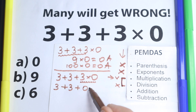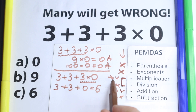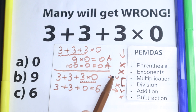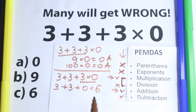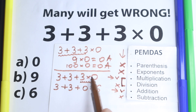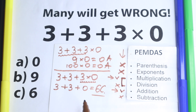So we have 3 plus 3 plus 3 times 0, which equals 3 plus 3 plus 0, which equals 6. As I said before, every time you multiply by 0 you get 0, but it applies only to these two numbers — 3 times 0 — not the whole expression. So 3 plus 3 plus 0 equals 6. This is the key moment: multiplication always comes before addition. Option C is the correct answer.